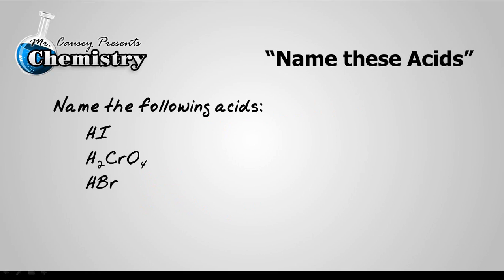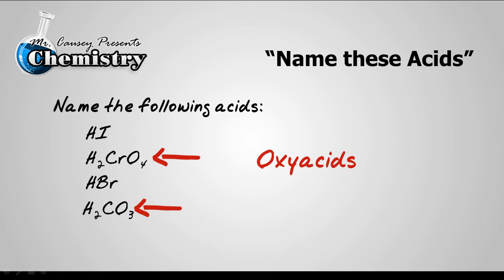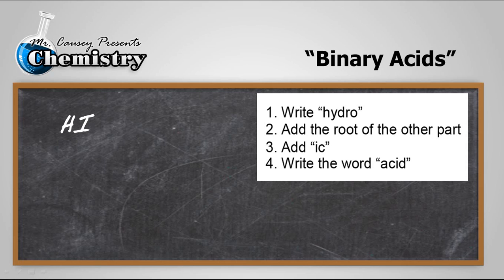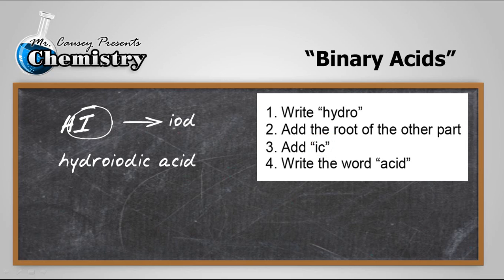Here are four acids. Two of them are binary acids and two of them are oxy acids. Looking at the binary acids first, let's bring up the rules. One of the first things we do is write 'hydro.' Then we add the root of the other part — in this case that's iodine. And then we add 'ic' and the word 'acid': hydroiodic acid.